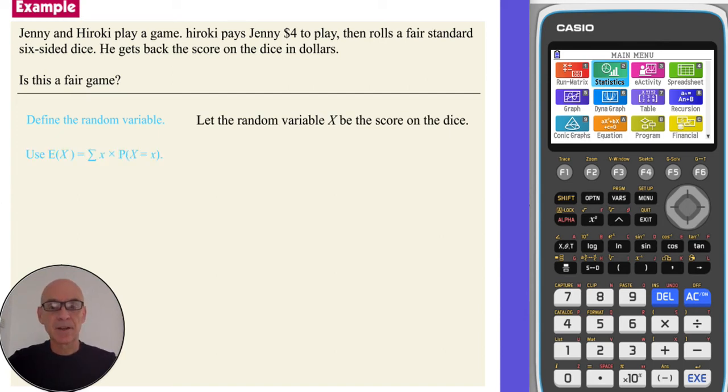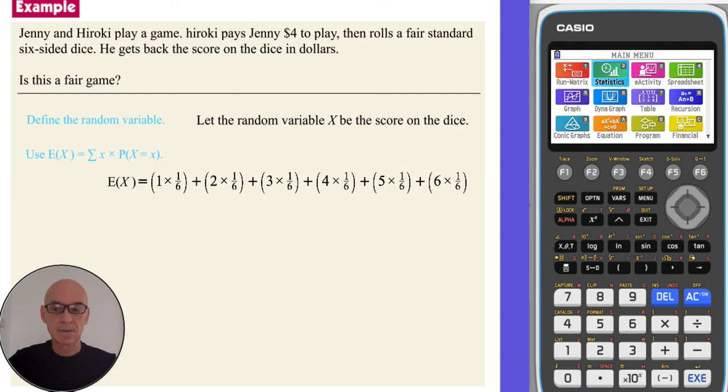And to calculate the expected payment, we use our formula. As it's a fair standard six-sided dice, each of the probabilities is equal to one sixth. So the expected payment is equal to $3.50.